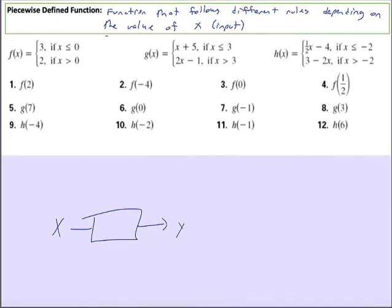Input goes in, output comes out, and what happens in the machine is some combination of operations: adding, subtracting, multiplying, dividing. So far we've learned how to do absolute values. All these different things are what goes into the function.